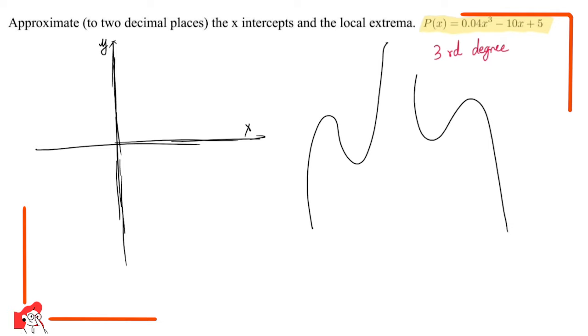In our case, we have a positive leading coefficient 0.04, so we should have something that looks like that. And depending on the graph I got, I found something that looks like this.